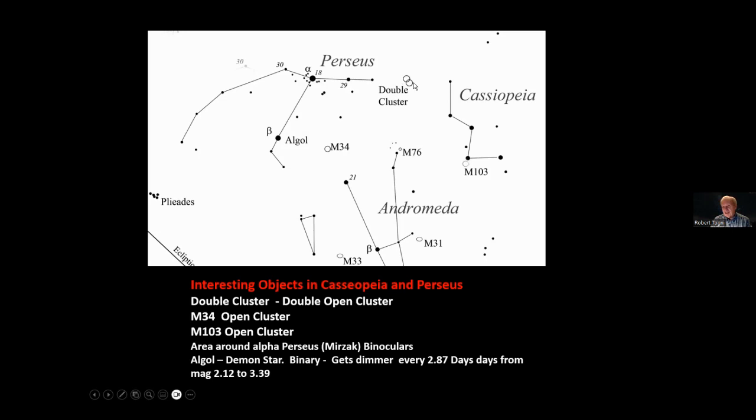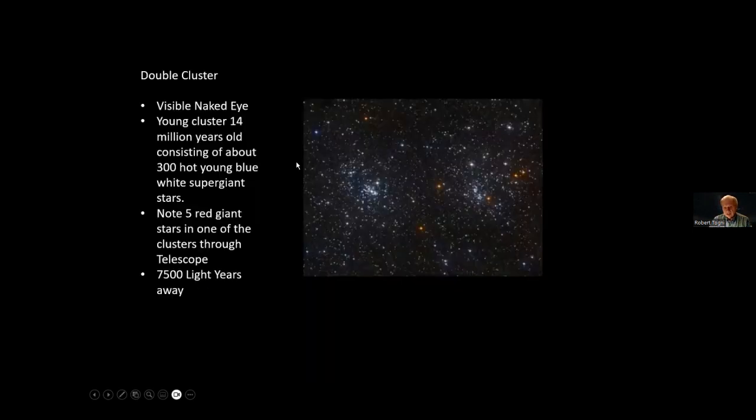The double cluster is real easy to find between Cassiopeia and Perseus right there. That's one of the first objects I looked at with a four and a half inch telescope back when I was a kid, a long time ago. I was about 22, I think. One of the first objects I looked at was the double cluster and it's a really nice thing to look at with that size telescope.